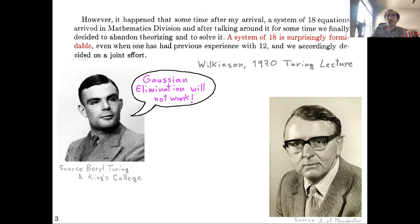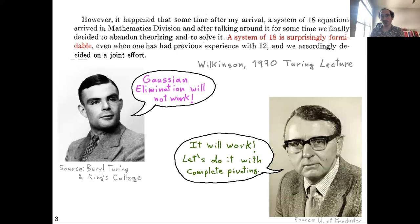There was some discussion about it — Turing was saying that Gaussian elimination would not work. But Wilkinson, as leader of the team, decided to go ahead with Gaussian elimination with complete pivoting and do the computation anyway. As you can imagine, arguing against a genius like Turing at the time was probably not easy. But they went ahead and it succeeded.